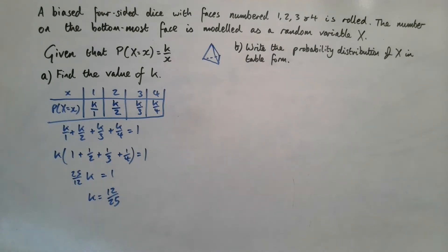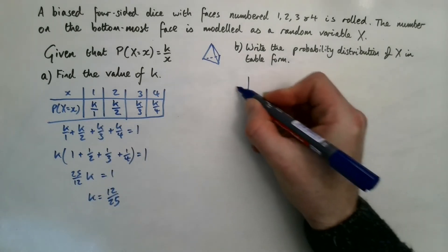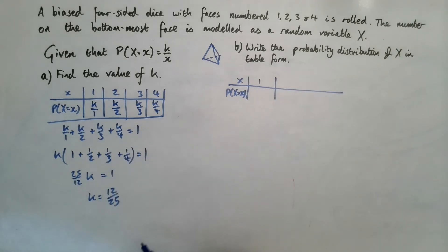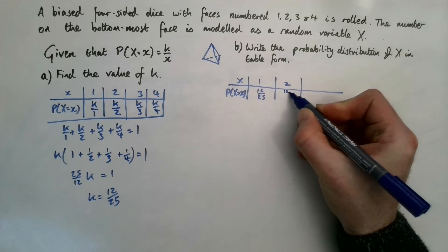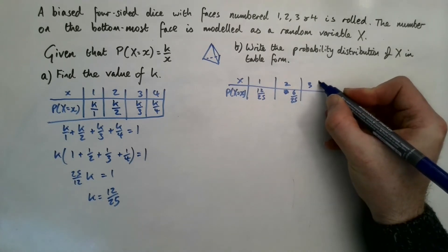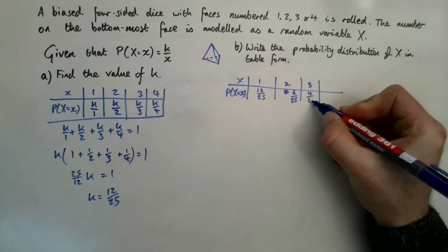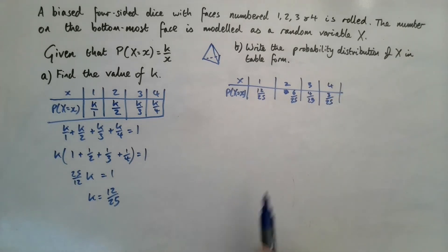Now we write the probability distribution in table form by substituting k = 12/25. For x=1: 12/25; for x=2: 6/25; for x=3: 4/25; for x=4: 3/25. Checking: 12 + 6 + 4 + 3 = 25, so they sum to 25/25 = 1. ✓